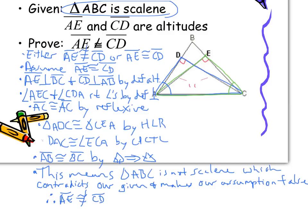Let's recap that proof. We're given that ABC is scalene. We know that AE and CD are altitudes — perpendicular, giving right angles. We assumed that AE was congruent to CD. With that we had our two legs, then proved our hypotenuse congruent to itself by reflexive. Once we had those two triangles congruent, we used CPCTC to prove two angles congruent, which by angles and sides told us segments AB and BC are congruent. If they were congruent, triangle ABC can't be scalene — there's our contradiction. Therefore AE is not congruent to CD.